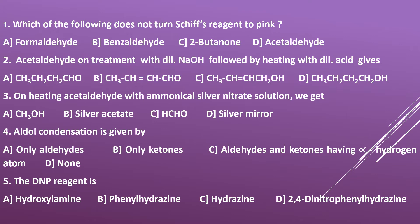First question: which of the following does not turn Schiff's reagent to pink color? Options: A) formaldehyde, B) benzaldehyde, C) 2-butanone, D) acetaldehyde. Here you can observe A, B, and D are aldehydes whereas C is a ketone. Therefore the answer is ketone, that is option C.